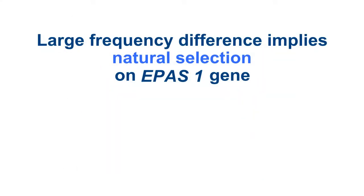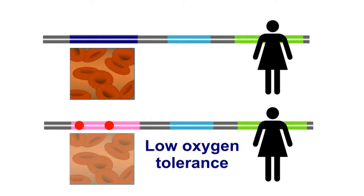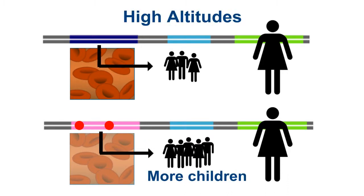Because the frequency differences are too big to be explained by chance, they must be explained by natural selection. Natural selection occurs when the environmental conditions favor the survival of individuals with one form of a trait over another. In this case, a variation in the EPAS1 gene allows the body to better cope with lower oxygen. Individuals with this version of the gene are more likely to survive and pass that gene to their children, but only in high-altitude environments.